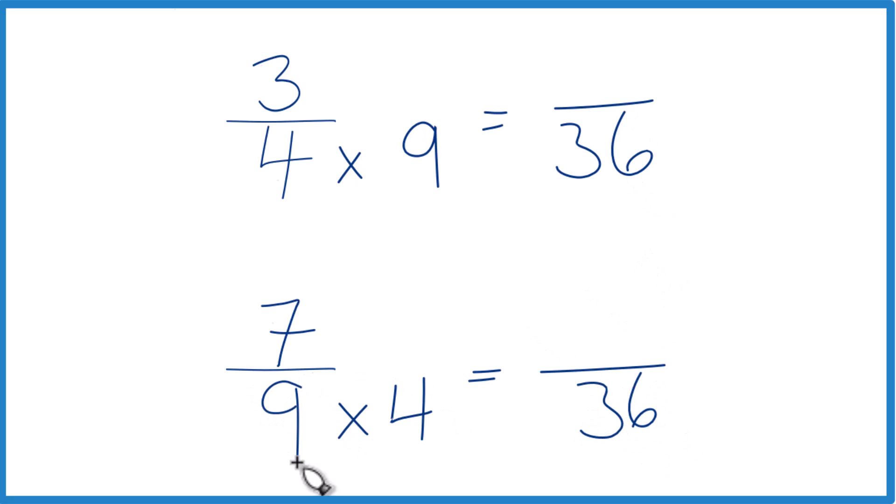But we can't just multiply the denominator by 4 here. We need to multiply the numerator by 4 as well. 4 over 4, it's just 1. Multiplying by 1 doesn't change the value, just the way it's represented.